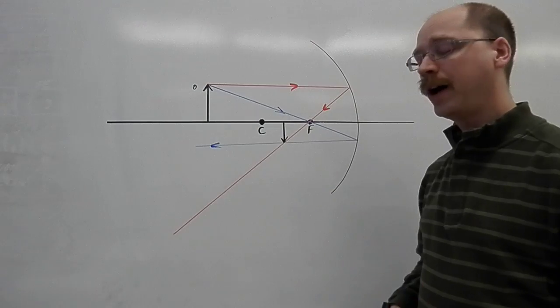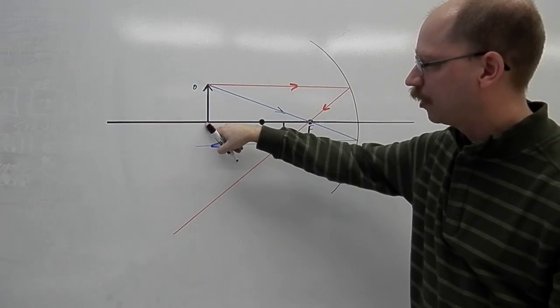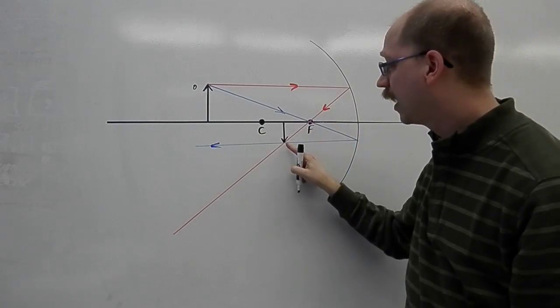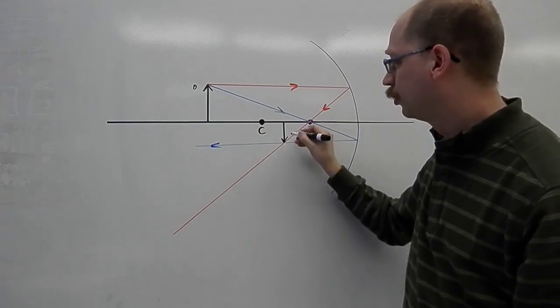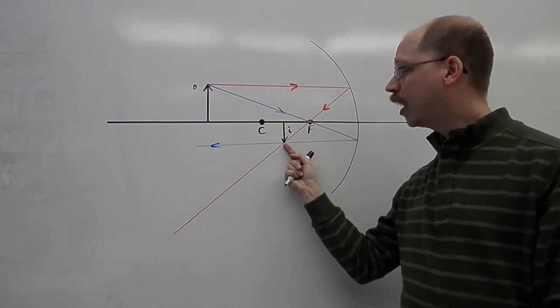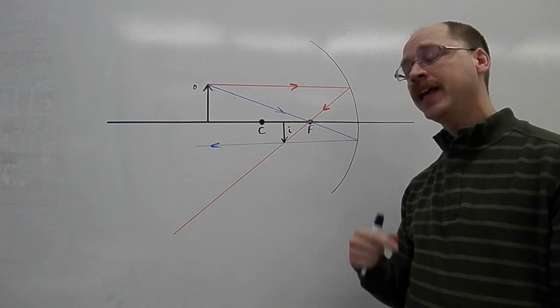So, I draw my image like that. Notice, the tail of the object was on the principal axis, the tail is on the principal axis. But the head of my image, which I'll label with an i, is down here, where the reflected rays crossed.